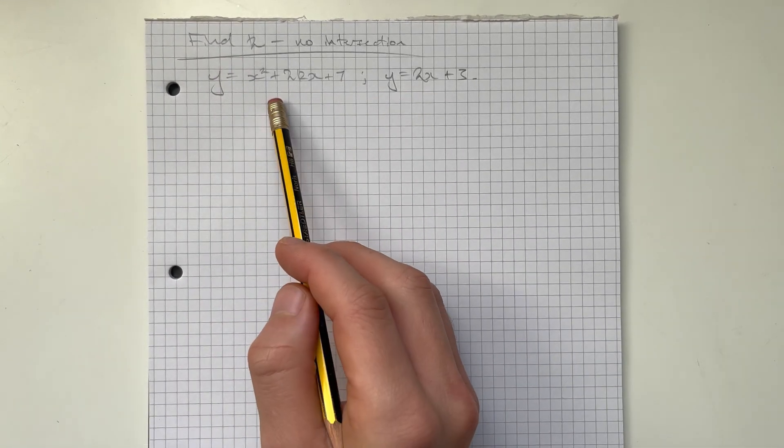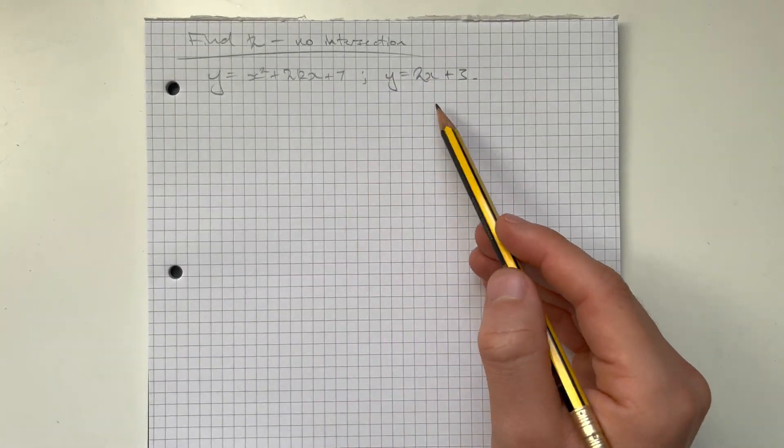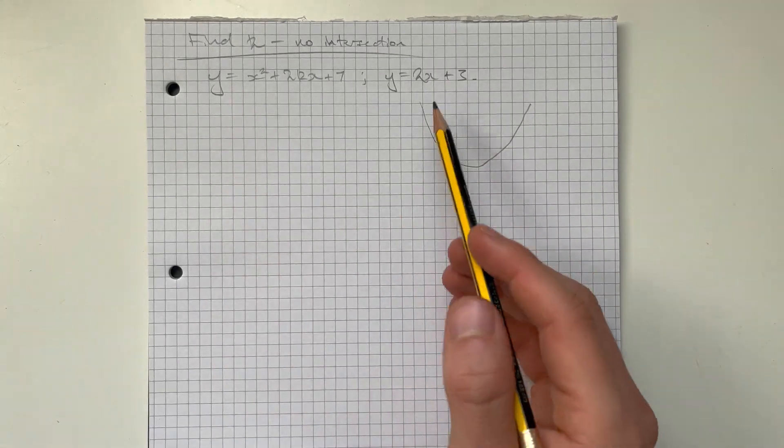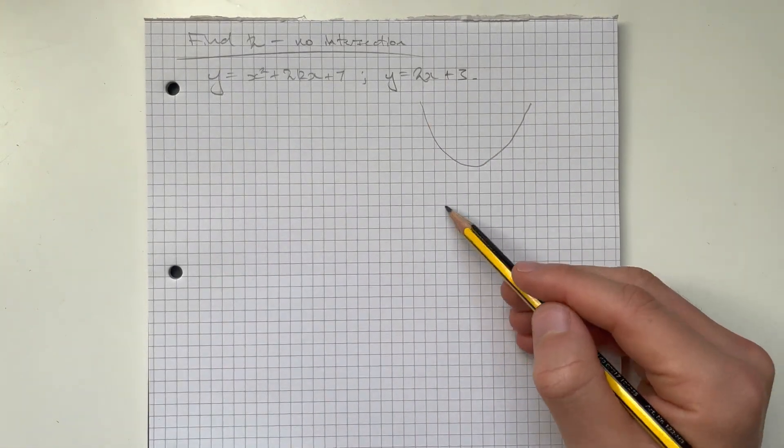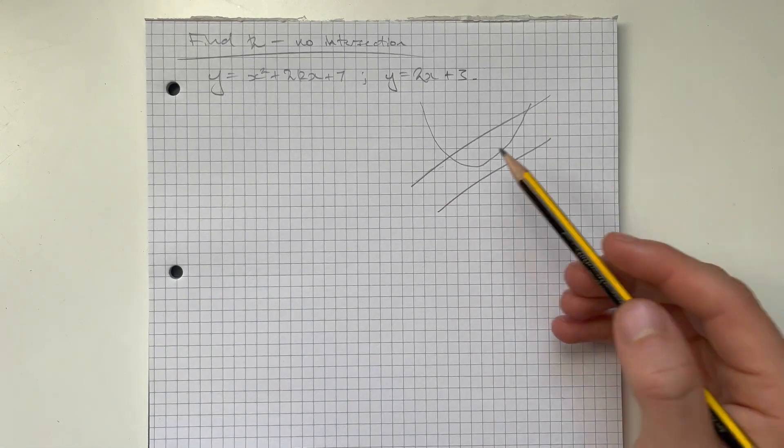What we have here is one quadratic and one linear equation. The quadratic is a U shape. We know it's going to be positive because it's got a positive A value here. And then the straight line as well, something like this. So we can see at some points it's not going to intersect, and at some points it's going to intersect once.